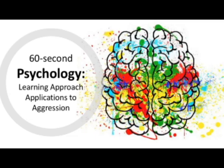Both of these examples reinforce the bully's aggressive behaviour and make it more likely to be repeated. Although operant conditioning can explain why aggressive behaviour may be repeated or not, it doesn't explain why it happens in the first place. This can be explained better through social learning theory.